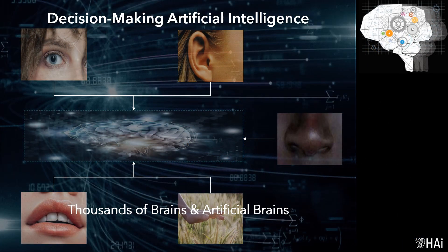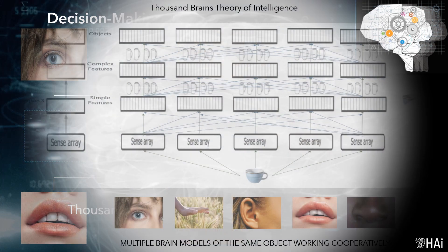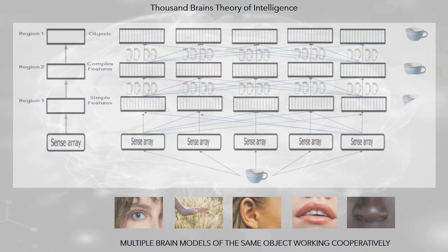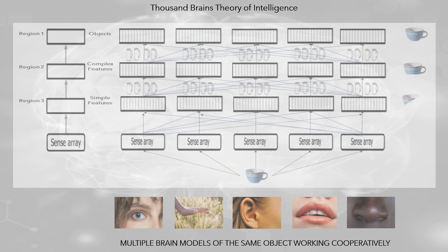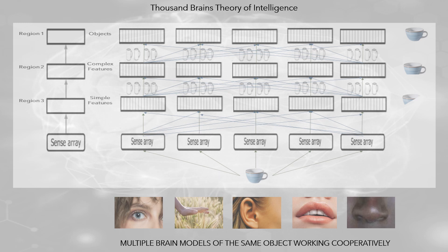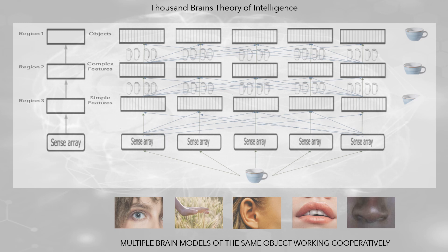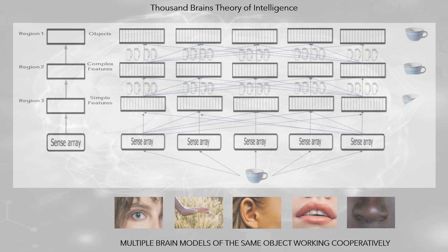Another important contribution of Hawkins is related to the multiple brain models of the same object working cooperatively. To recognize an object, five models of that object can intervene, each of them generated by one of the senses that the human being enjoys. Complete knowledge occurs when the knowledge generated by all models in all layers are integrated.